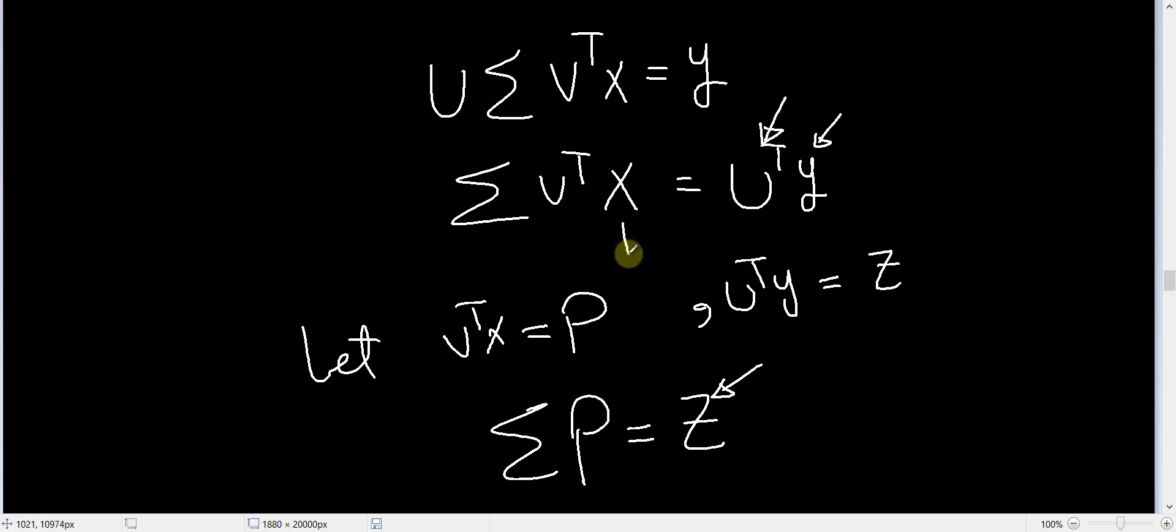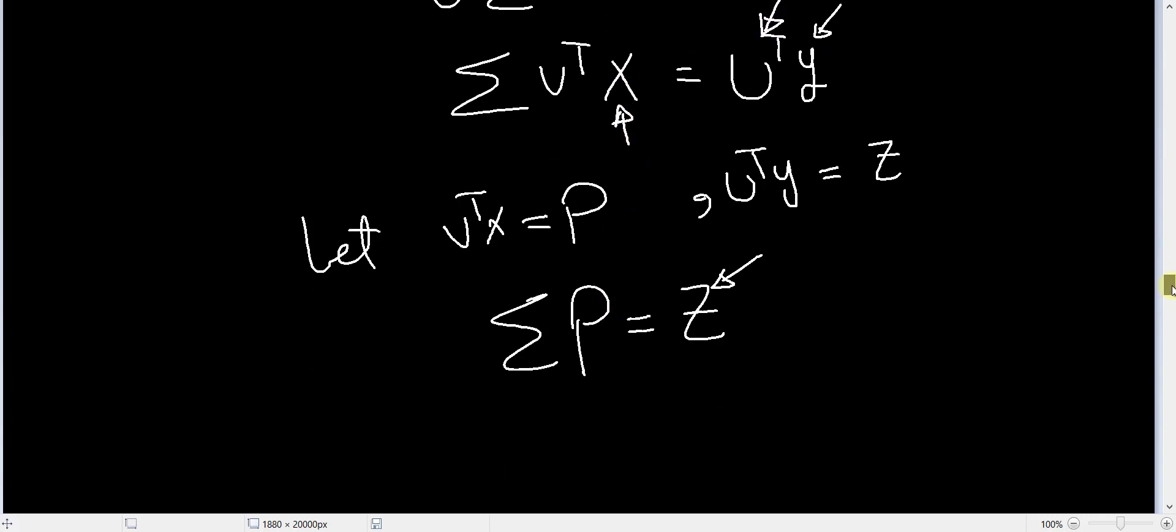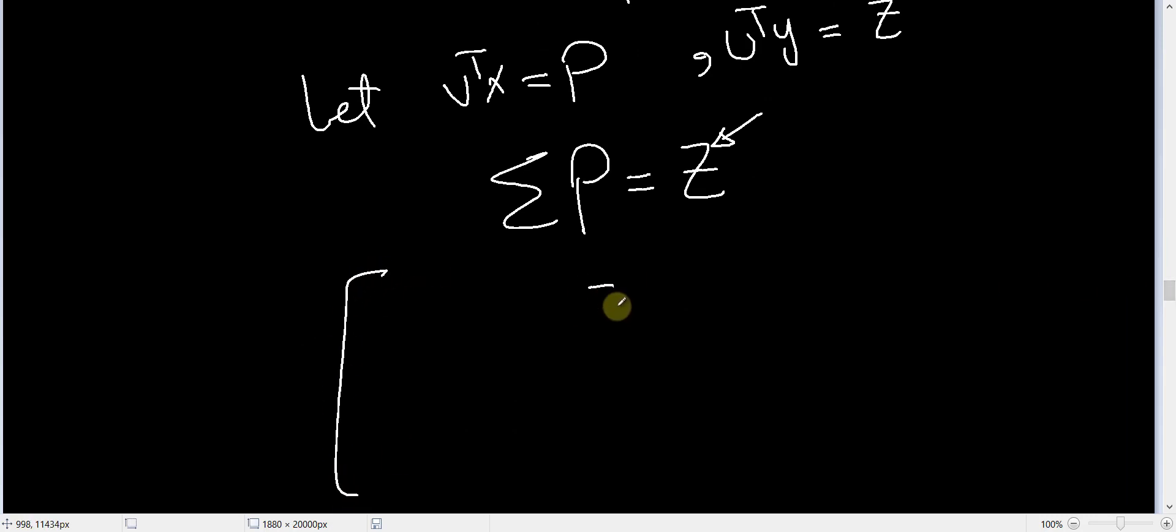You don't know P since you don't know X, but you can write this as follows. Because you have some diagonal matrix, let's say σ₁, σ₂, up to σ_N multiplied by some unknown vector P.